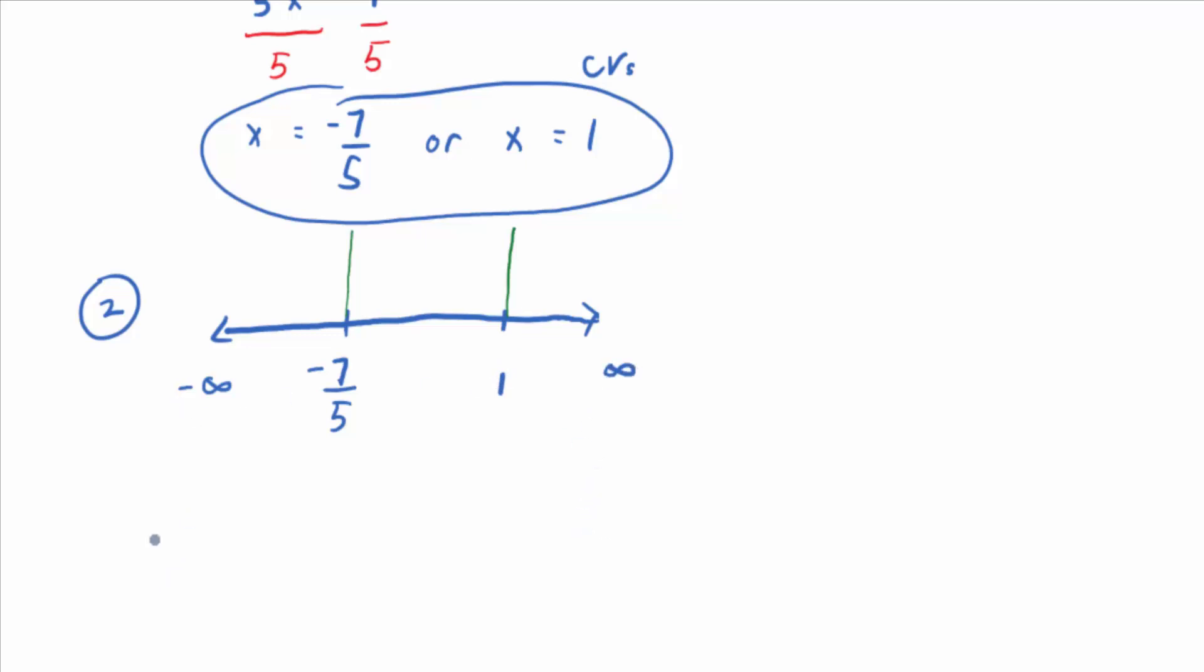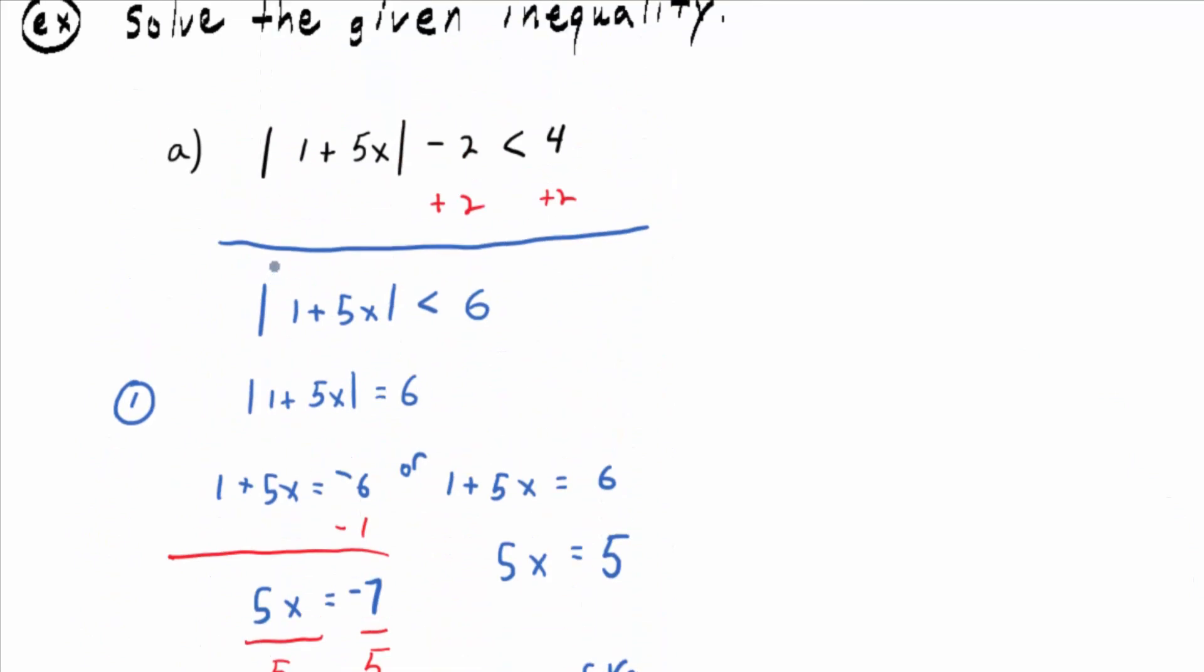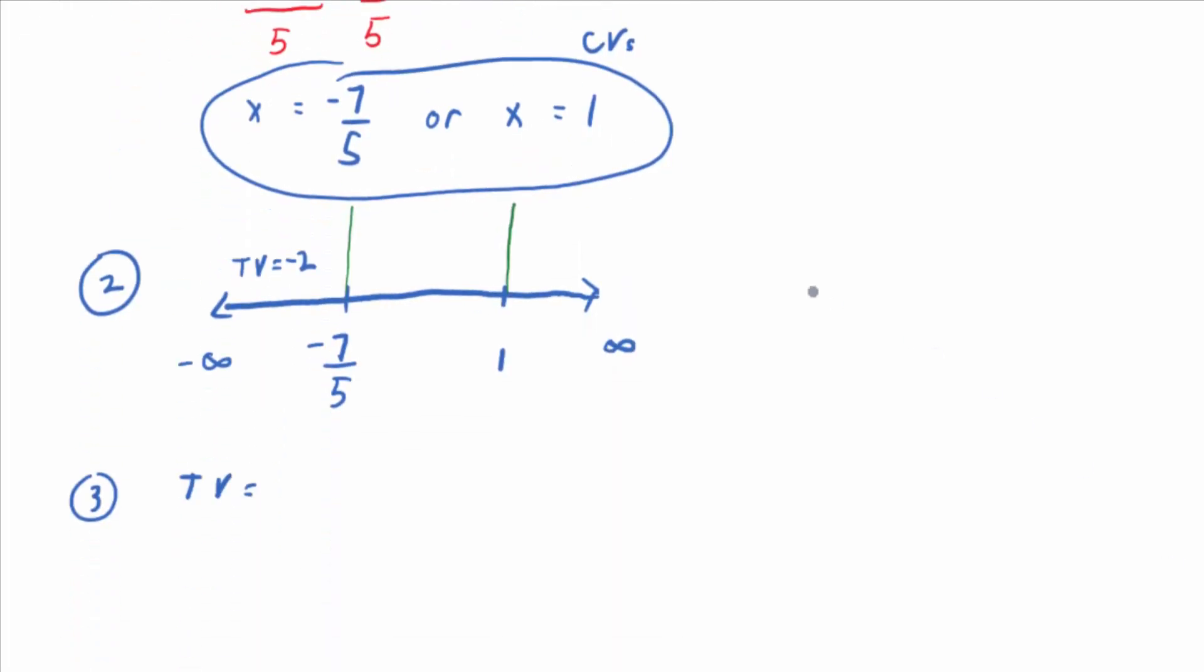Let's pick some test values based on those intervals. What would the first test value be in between negative infinity and negative 7 fifths? How about a test value of negative 2? That's less than negative 7 fifths and it's easy to work with. Remember you're going to want to plug into the inequality that's solved for the absolute value. So the absolute value of 1 plus 5x is less than 6.